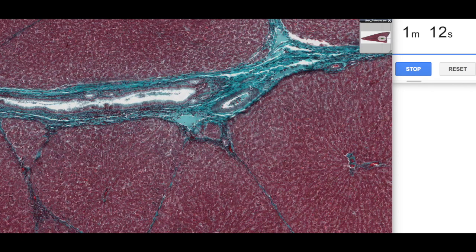The first of these is the branch of the hepatic artery. So here we've got a hepatic arteriole. These are the endothelial cells. These are the smooth muscle that's making up the wall of the arteriole.